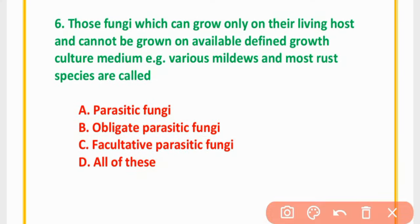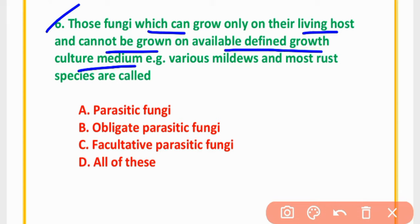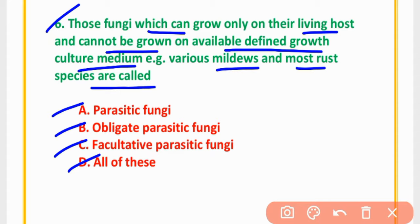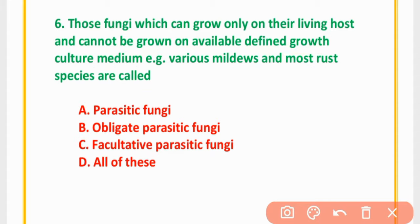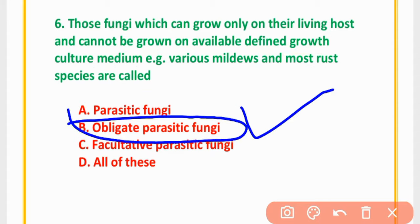MCQ Number 6: Those fungi which can grow only on their living host and cannot grow on available defined growth culture medium — e.g., various Mildew and most Rust species — are called: Parasitic fungi, Obligate Parasitic fungi, Facultative Parasitic fungi, or All of these. The correct option is option B: Obligate Parasitic fungi.